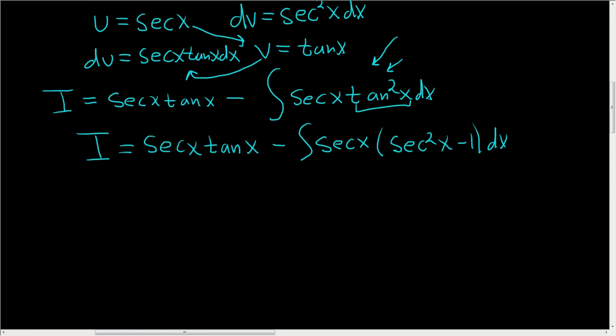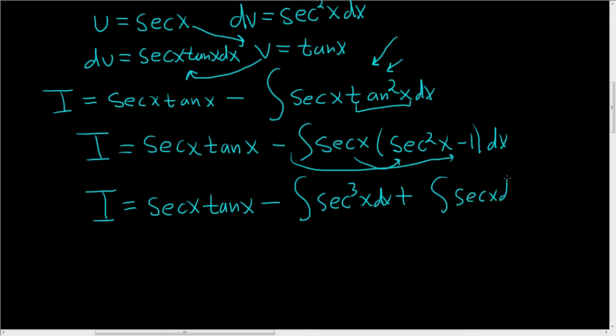So we end up with i. i is equal to secant squared x dx, right, because we're distributing. And then minus and minus and minus is plus. So we get plus secant x dx.